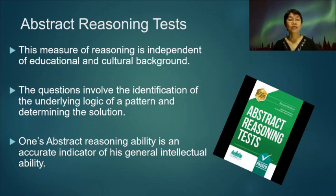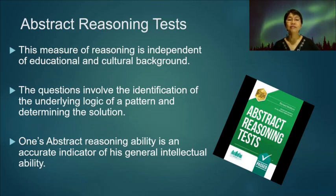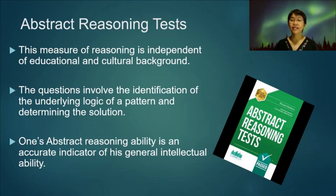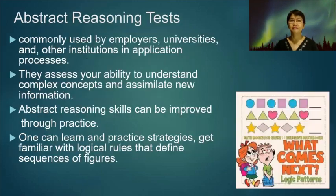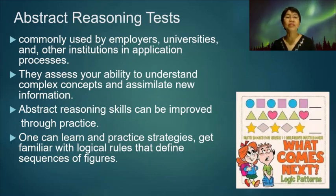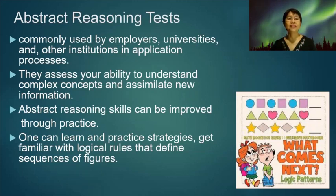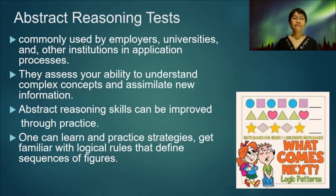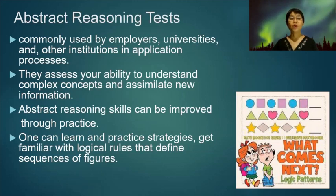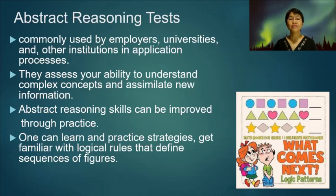The questions involve the identification of the underlying logic of a pattern and determining the solution. Abstract reasoning ability is an accurate indicator of general intellectual ability. Abstract reasoning tests are commonly used by employers, universities, and other institutions in application processes. They assess your ability to understand complex concepts and assimilate new information. Abstract reasoning skills can be improved through practice — one can learn strategies and get familiar with logical rules that define sequences of figures.